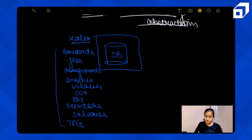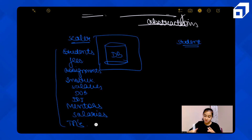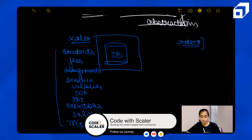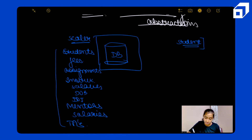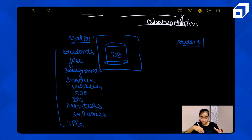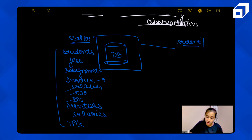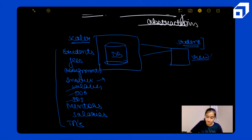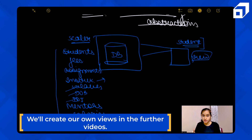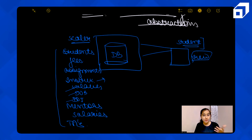Now, say a student wants to view or query the data. Does the student get the complete view of this scalar database? No — the instructor's information, their salaries, date of joining — that's non-relevant data that should not be shown to students. Students will not view the complete database; they'll view only their relevant part. We'll actually create views in the practical implementation later.